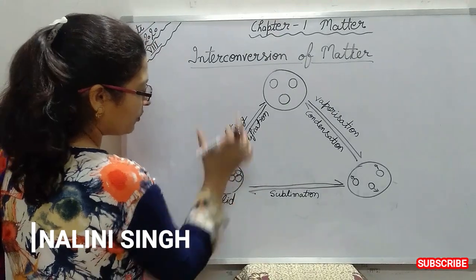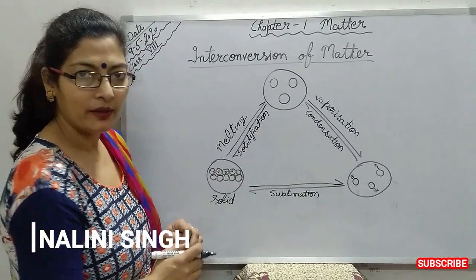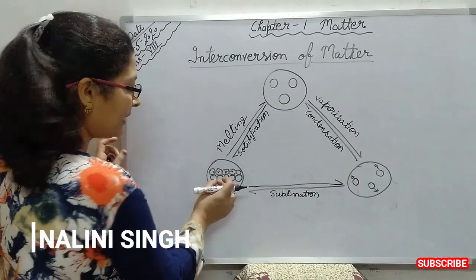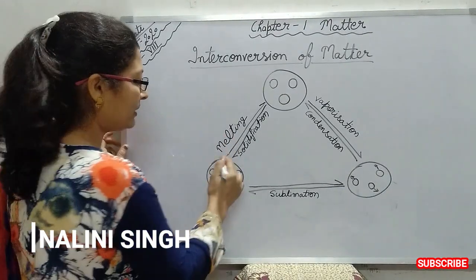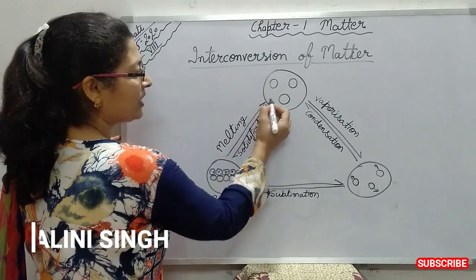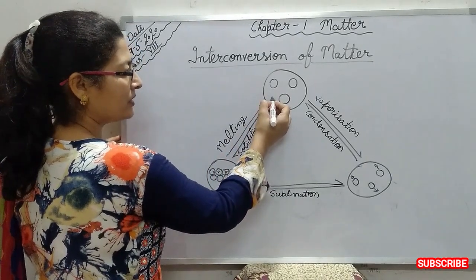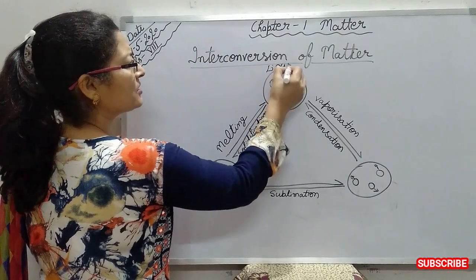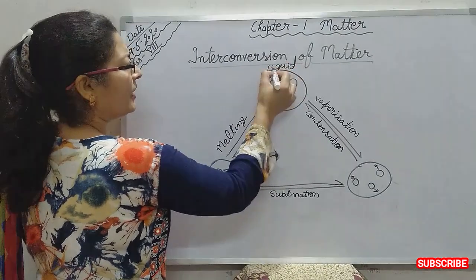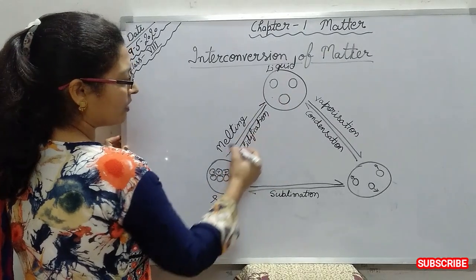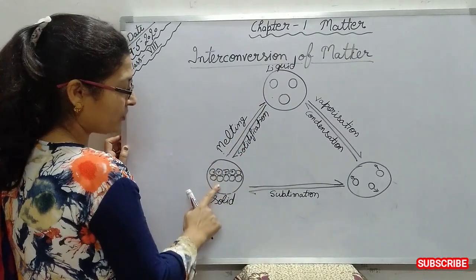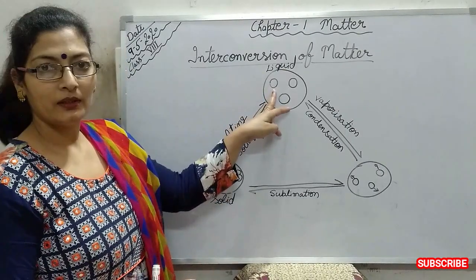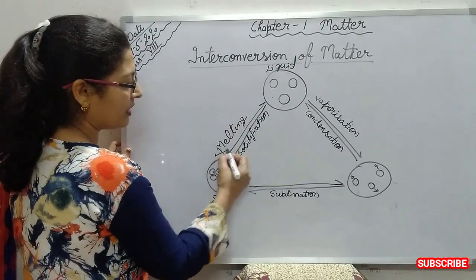When we are heating the solid, particles become more energetic and they become far apart. Slowly, they are going to another state, which is the liquid state. When we are going from solid to liquid, this conversion is called melting.